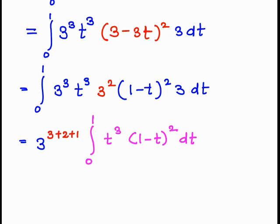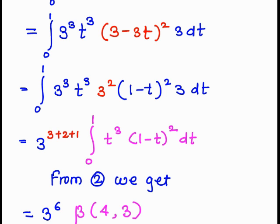Taking all constants outside the integration: 3 raised to (3 plus 2 plus 1) equals 3 raised to 6. The integral from 0 to 1 of t raised to 3 times (1 minus t) raised to 2 dt — this is now in the standard format of the beta function, giving 3 raised to 6 times beta(4, 3).